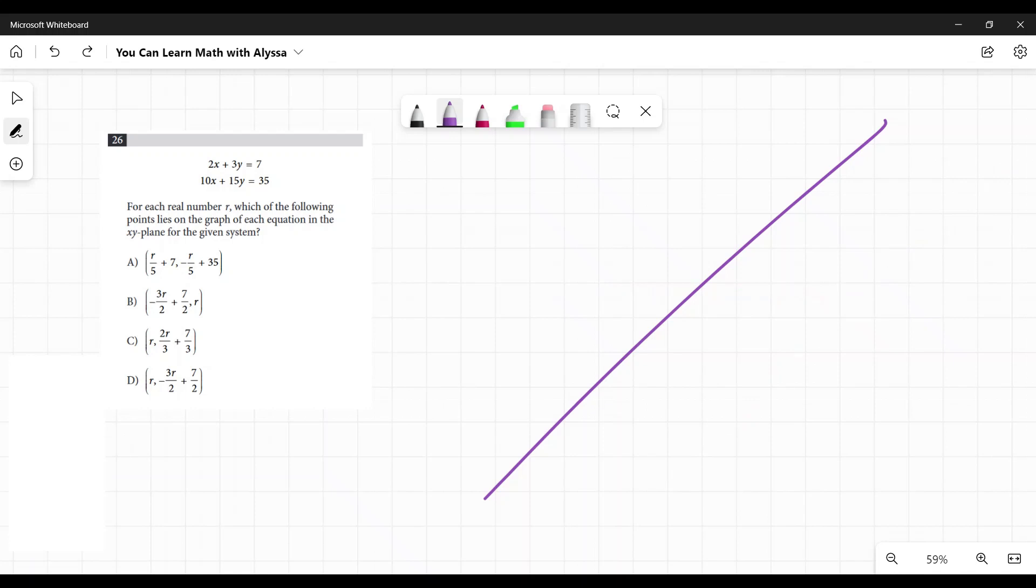But usually in algebra, when we're talking about systems of equations like this, they almost always are going to be two lines crossing, and they want us to find a solution. And here, they're telling us the solution is in variable form for every real number. And we're like, what?